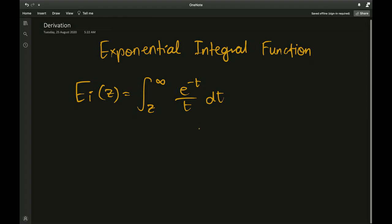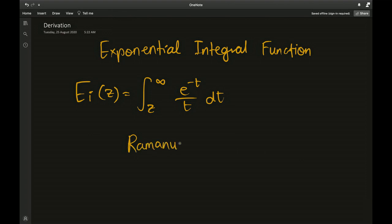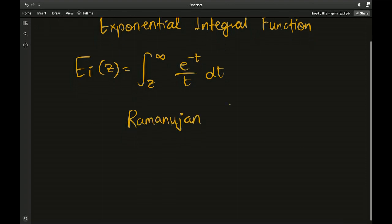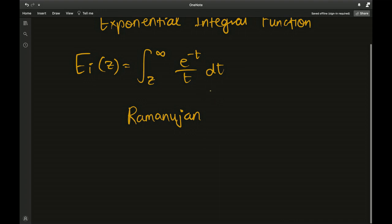Even if you use the Taylor series for the exponential, you still get an infinite series with no closed form. Also, z cannot be zero, otherwise we could try Laplace transform tricks. The applications are in physics and engineering — it's a well-known function. Ramanujan himself, among others, did heavy research in this area of special non-elementary functions.